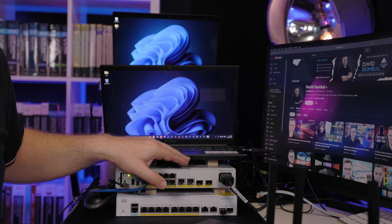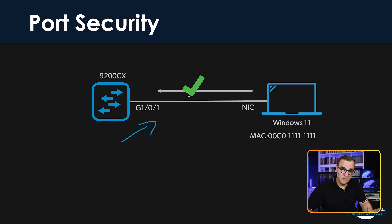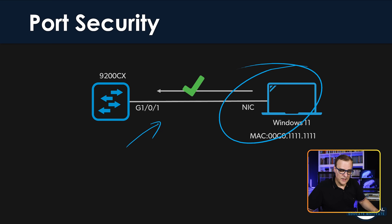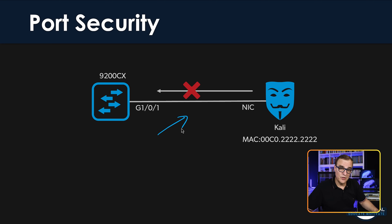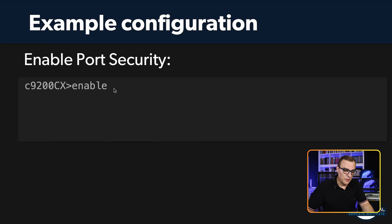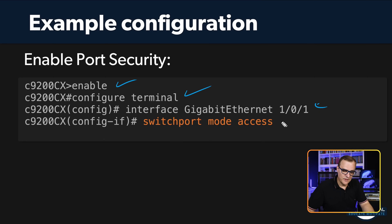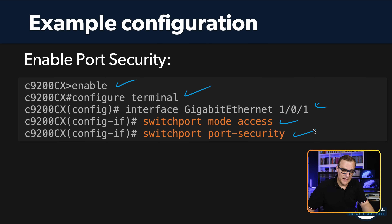Now it's okay to discuss the theory, but I think it means a lot more if you simply see this, so I'm going to configure port security right now on the switch. Port security can be enabled on either an access port or a trunk port, but you have to explicitly set that. You'll need to say whether the port is an access port or a trunk port, and then you can enable port security.